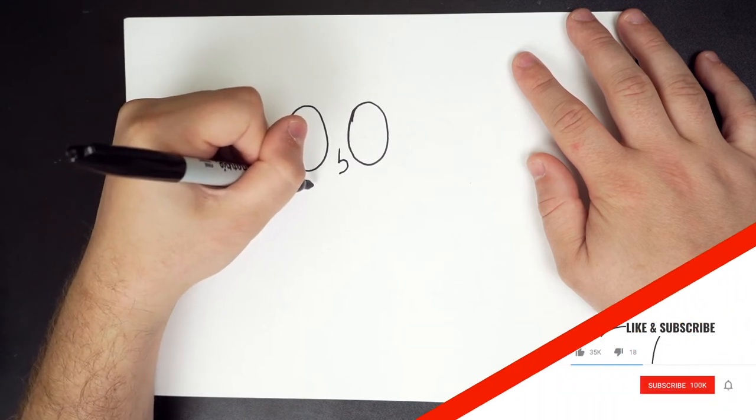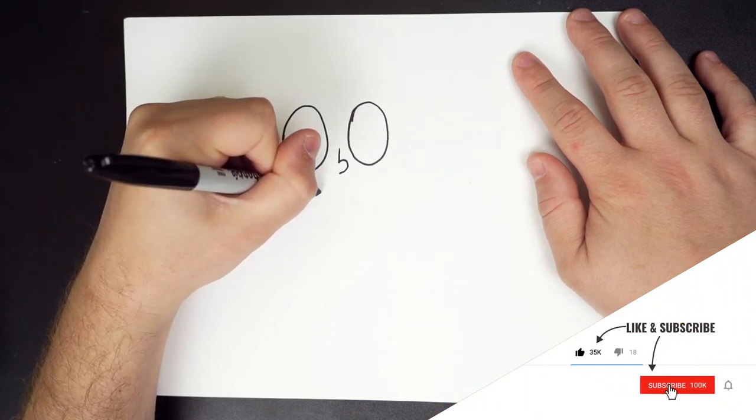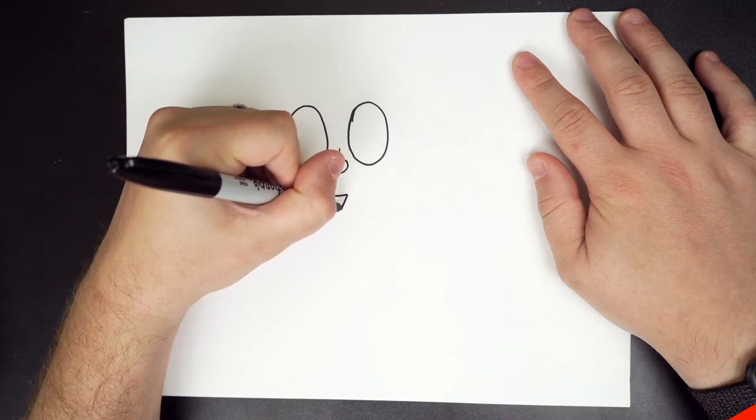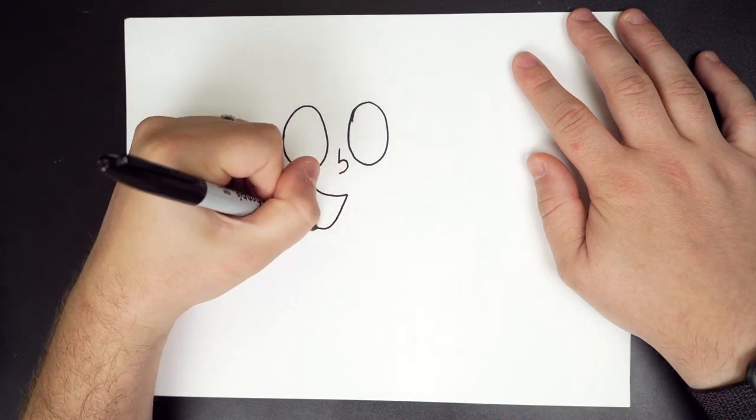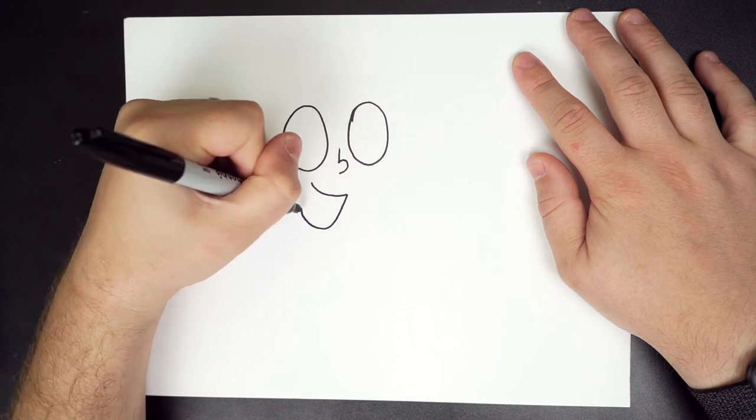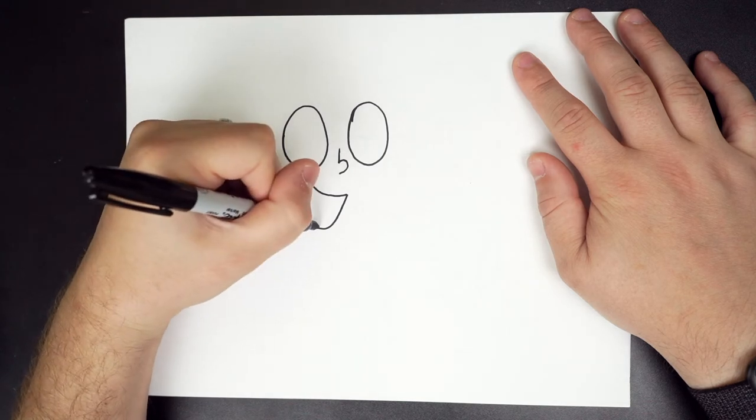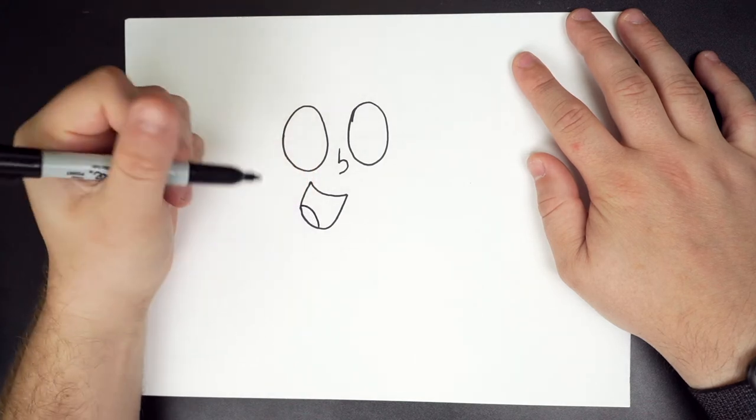Then her smile, we're going to start up here. Curl around. Stop. Come down, then curl. Stop. And then connect the lines. Awesome. And she has like a little tongue. Great.